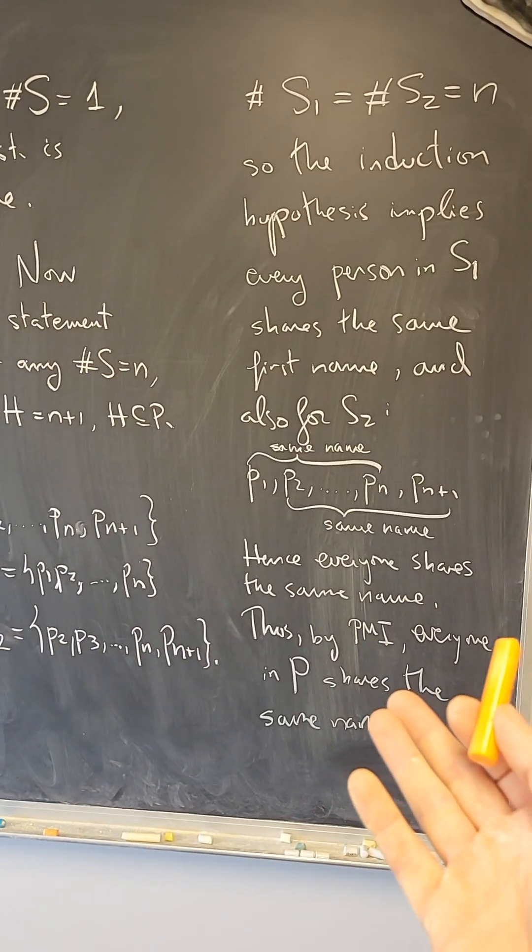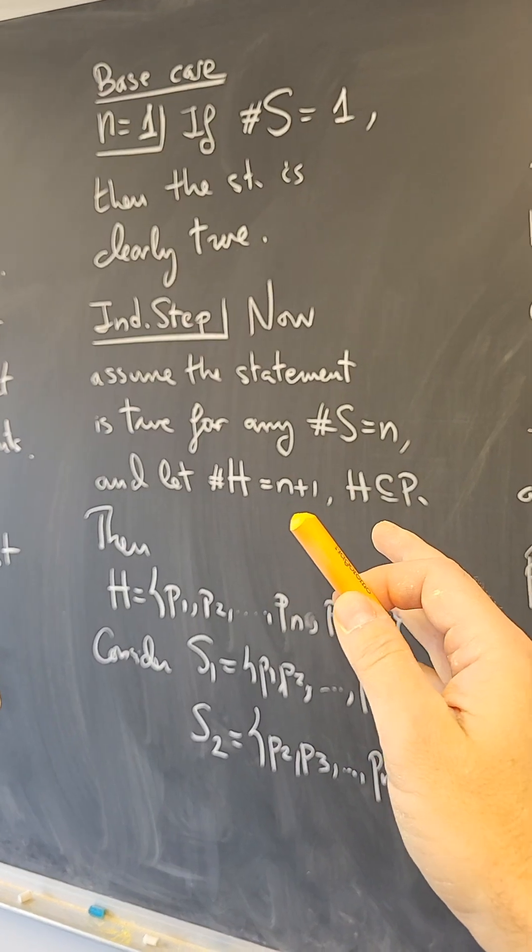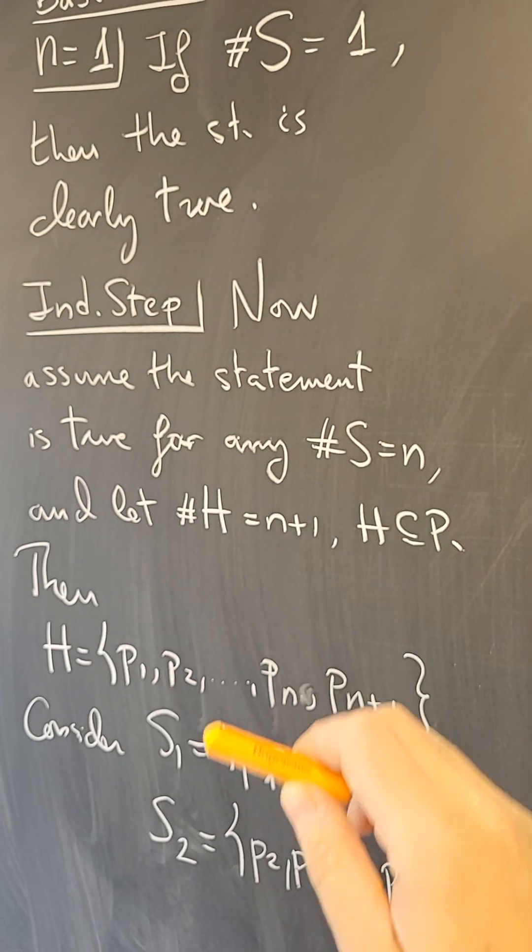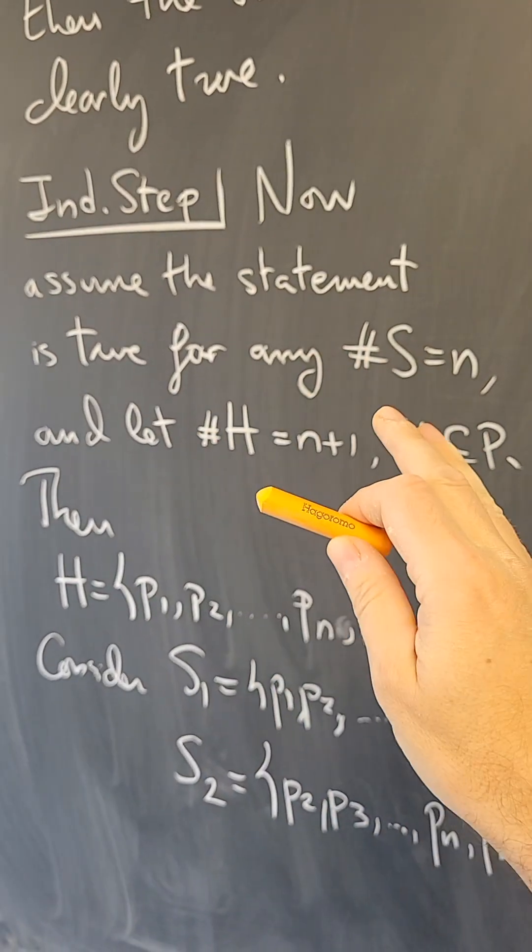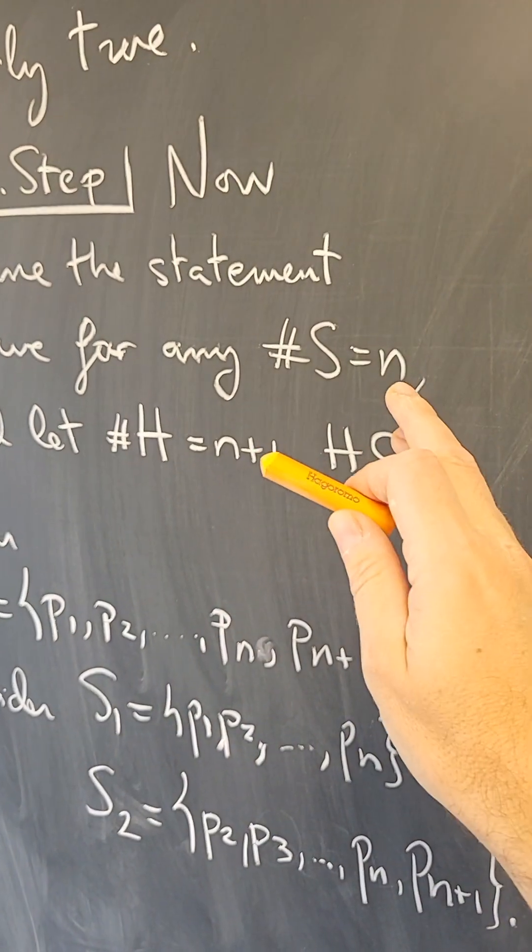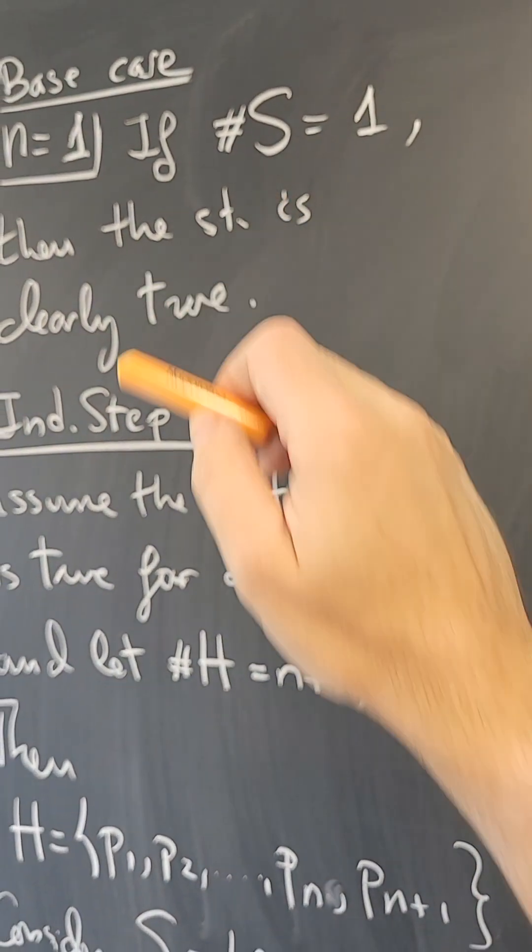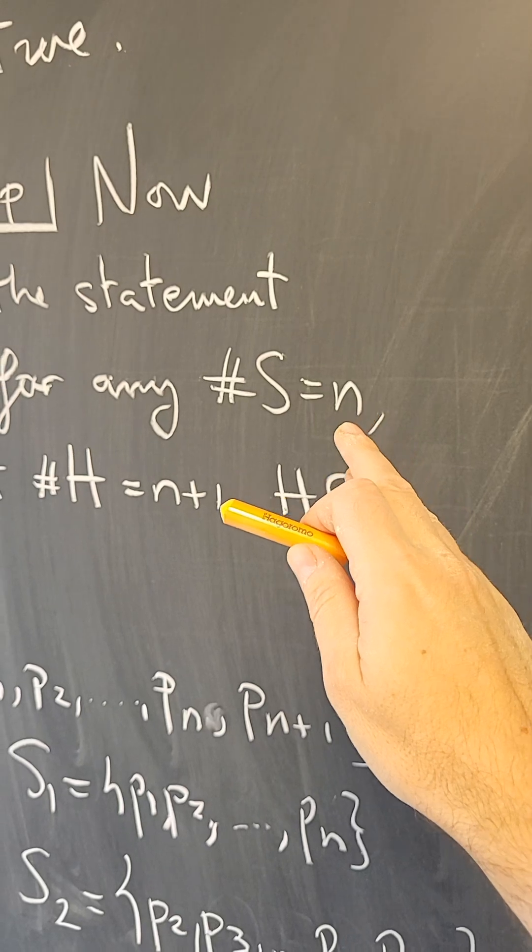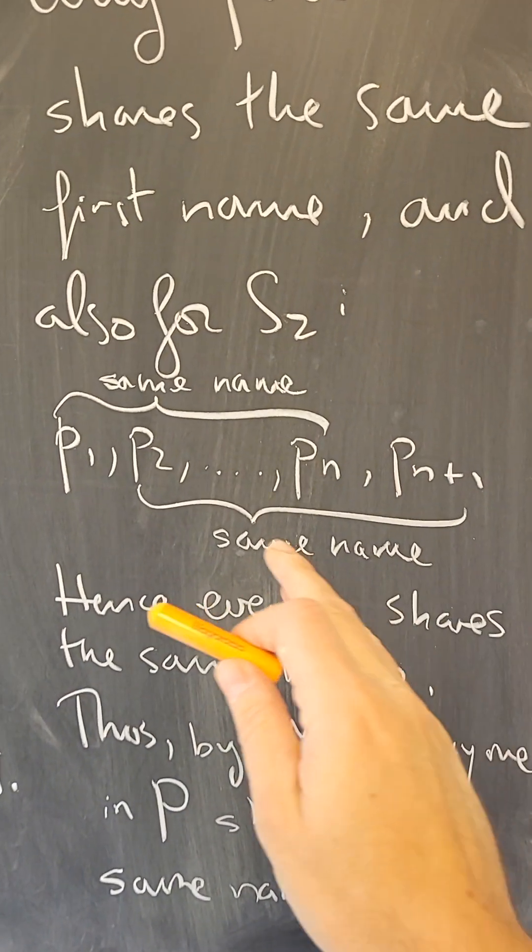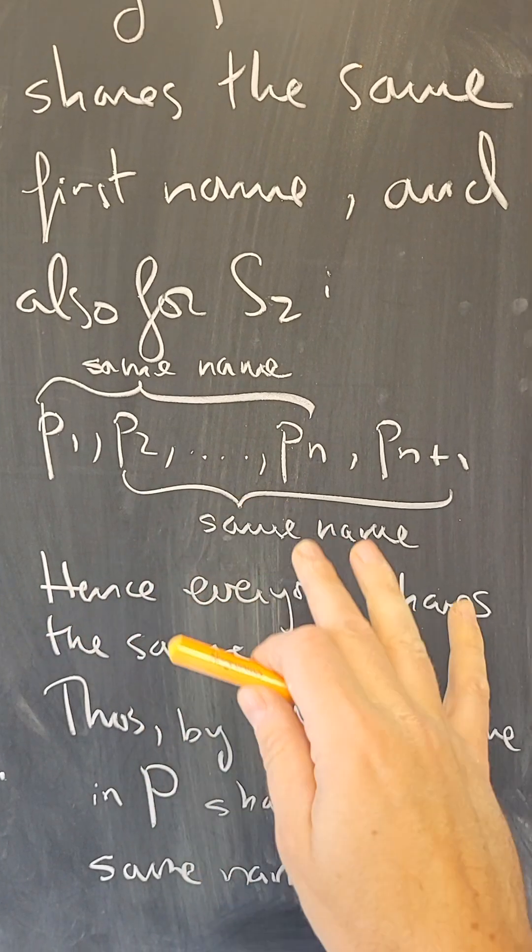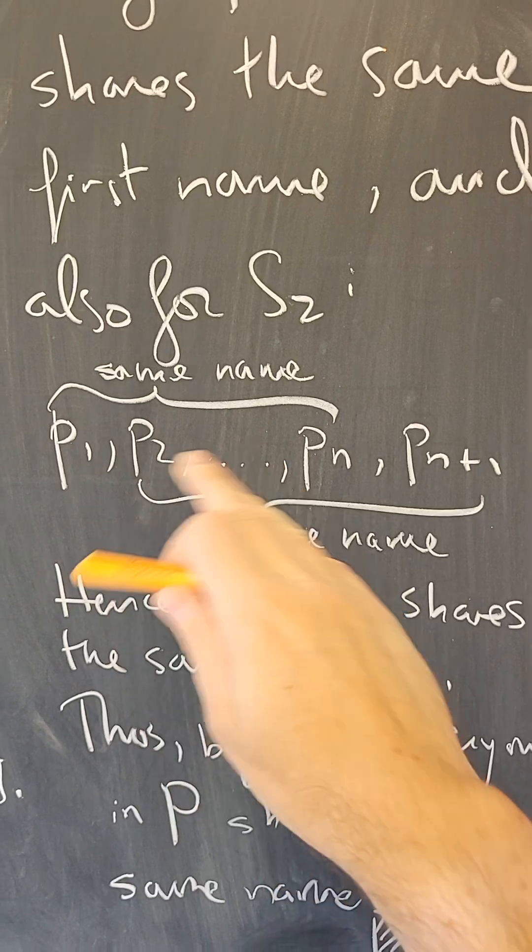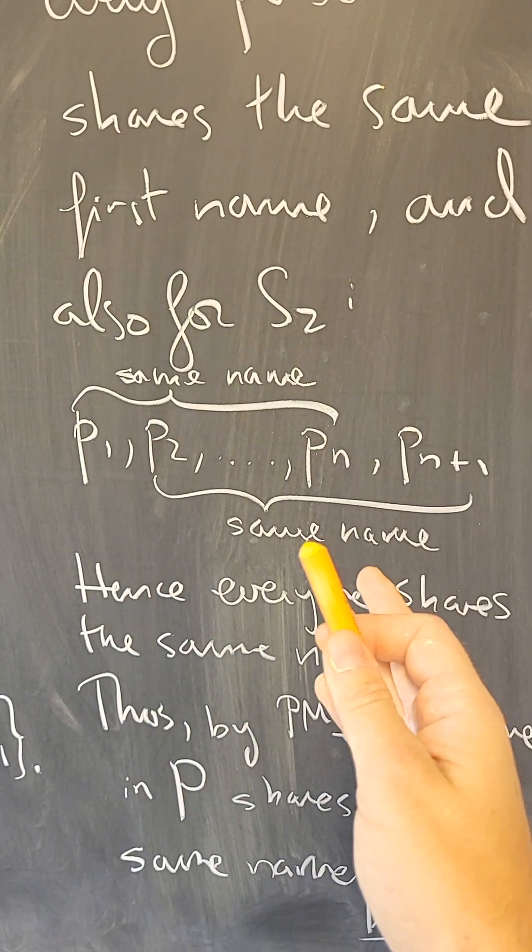So what's wrong with this proof? And the problem with this proof, the way I've written it, is that the induction step does not hold when N equals 1. You're supposed to be able to prove the induction step that the Nth case implies the N plus 1th case for any N bigger or equal to the base case. But here, when N is 1 and the size of H is 2, I cannot apply this method because essentially what happens is that H has two people in it, so there's P1 and P2, and there is nothing in between to be able to compare like I did in this proof.